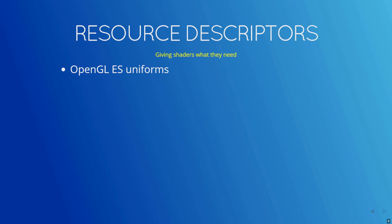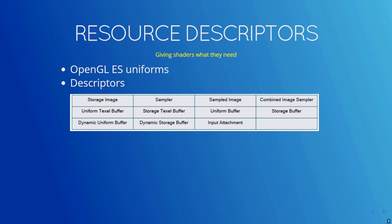Shaders access resources such as buffers and images. In OpenGL, you can call glGetUniform-flavored calls to figure out where to set resources like textures that your shader will access. In Vulkan, these shader resources are known as descriptors. There are about a dozen of these resources that Vulkan supports — sampler, sampled image, uniform buffer, and more.